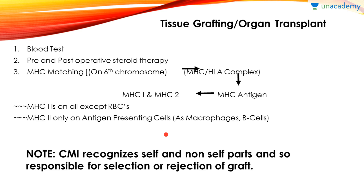Antigen presenting cells present antigens to the immune effectors like macrophages and B cells. When antigen is present, antibodies will go and interact with it. If the HLA complex is matching, it is accepted. If not, the immune system will destroy it — the graft will be rejected.